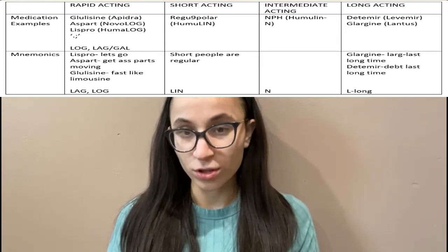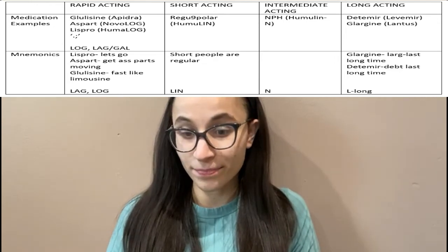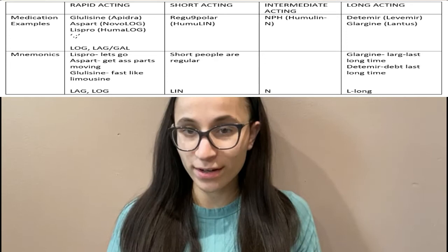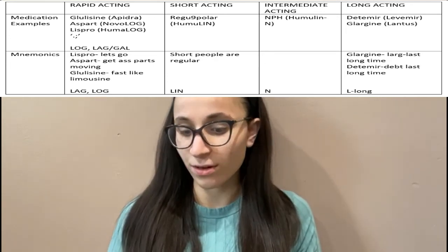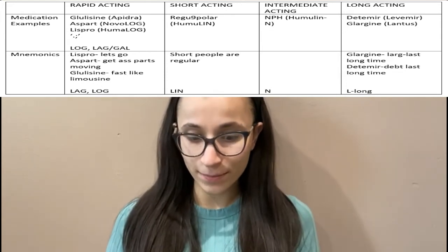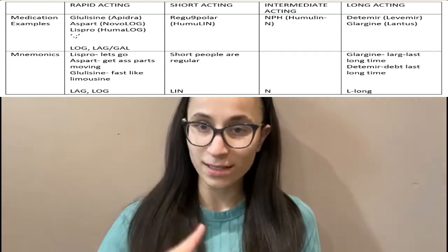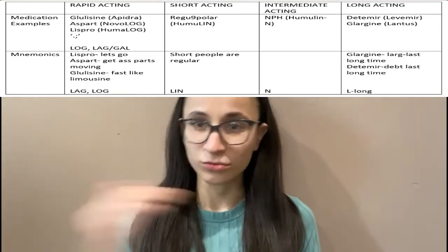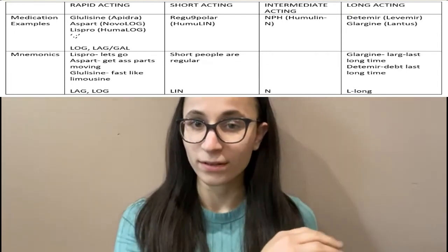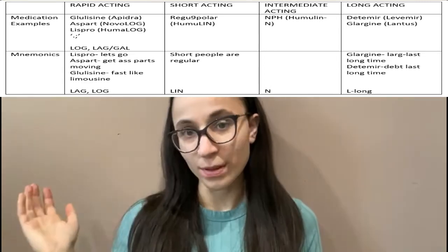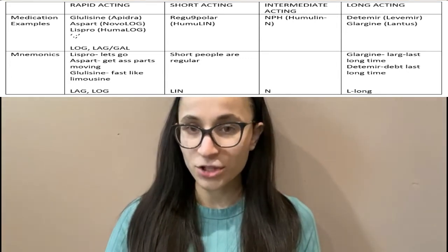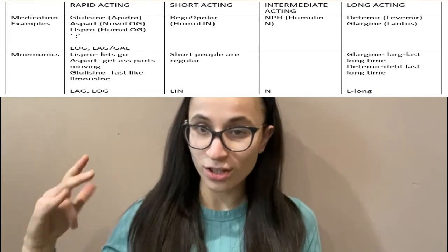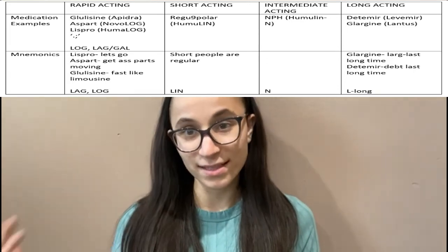For long acting, the generic names are glargine — think 'large,' large lasts a long time — and detemir — sounds like 'debt,' and debt lasts a long time. The brand names for long acting all start with L. So glargine and detemir are both long acting insulins.